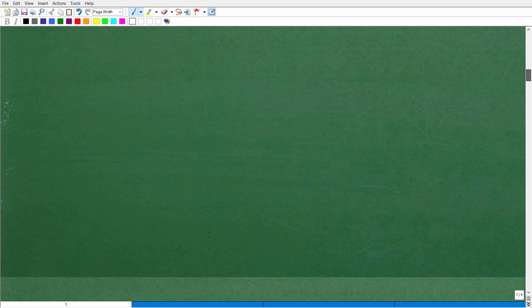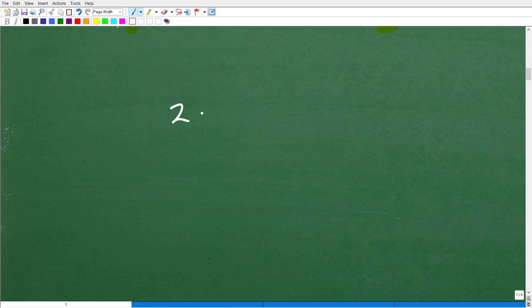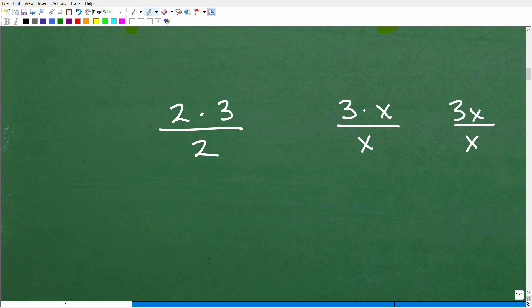Okay, so when can you actually cross-cancel like this? Well, you can always cross-cancel factors. So, if I have 2 times 3 over 2, okay, or let's see here, 3 times X over X, which, of course, in algebra is the same thing as 3X over X. When things are separated by multiplication, these are what we call factors. You can cross-cancel like factors, so this 2 can cross-cancel with that 2. This would be equal to 3. 3 times X, we have X up here and X up here. These are factors. I could cross-cancel like factors all day long. That is correct, okay?